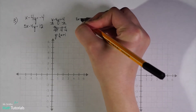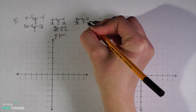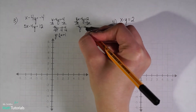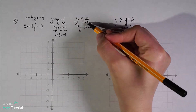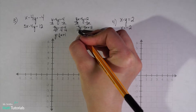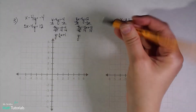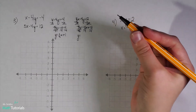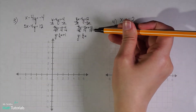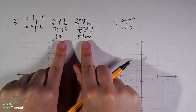Now the second equation: 5x minus 4y equals 12. I subtract 5x from both sides to get negative 4y equals negative 5x plus 12. I then divide everything by negative 4. The signs reduce to positive, giving me y equals five-fourths x minus 3. Now I have two lines in slope-intercept form that I can graph.